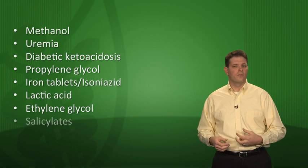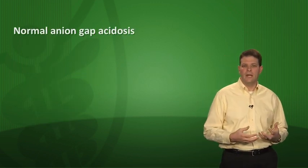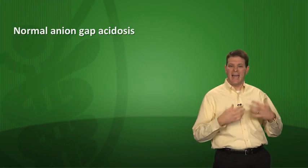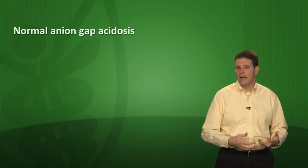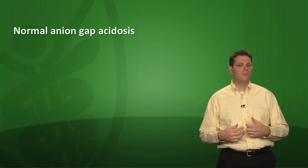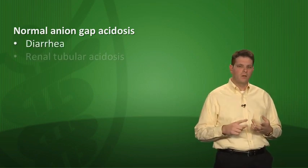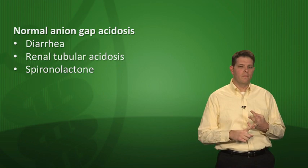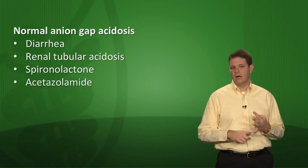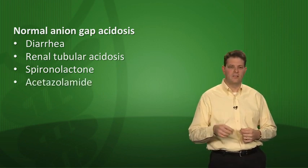S in MUD PILES is for salicylates like aspirin. For normal anion gap acidosis, you're not adding acids but instead losing bicarb. This comes from less dramatic causes like diarrhea, renal tubular acidosis, spironolactone, or acetazolamide.